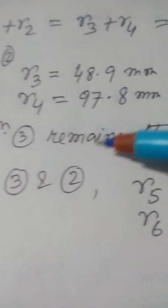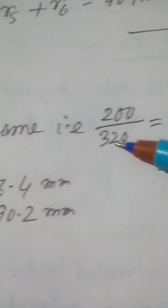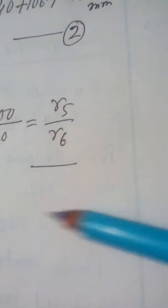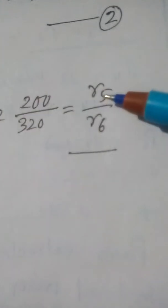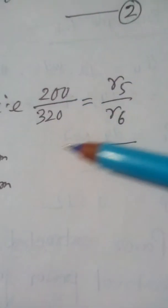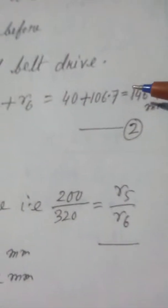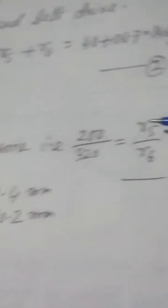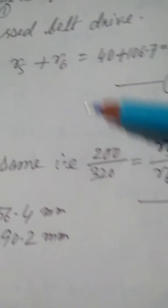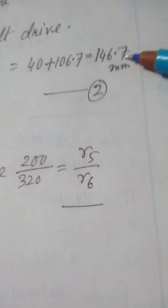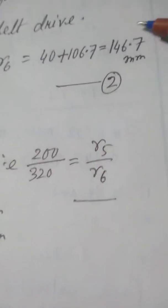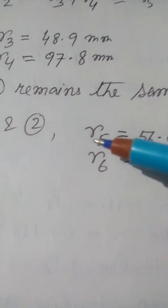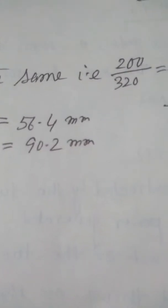For pulleys 5 and 6 in the cross belt case, Equation 3 from the speed ratio is the same as before. Use the sum constraint R5 + R6 = 146.7 as the second equation, then express R5 in terms of R6 and substitute to find both values.